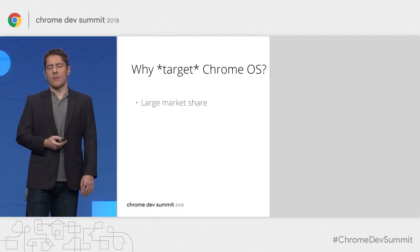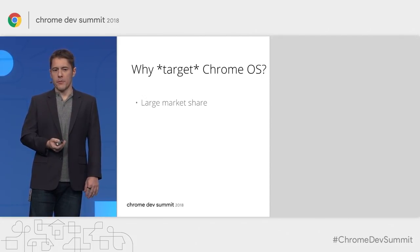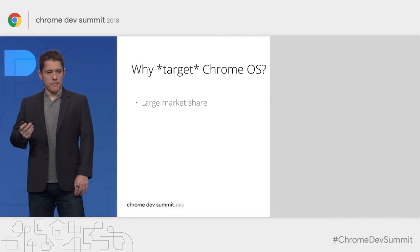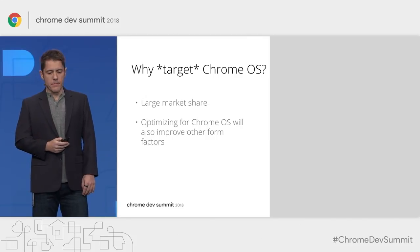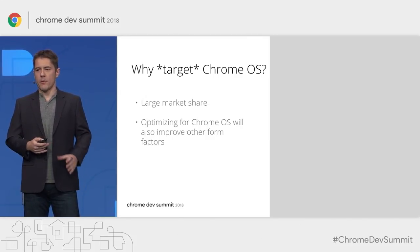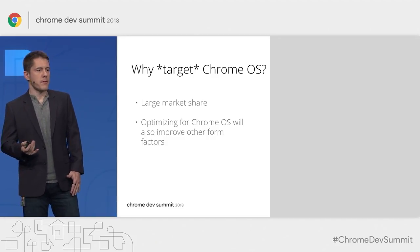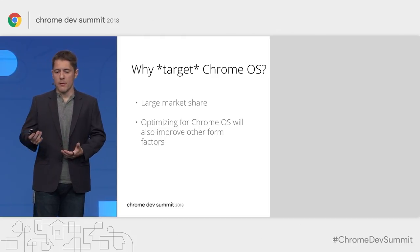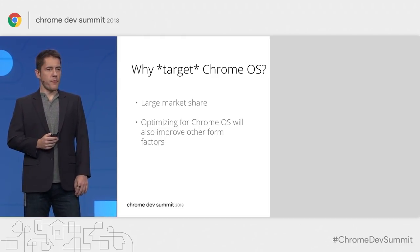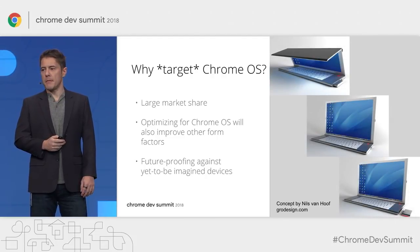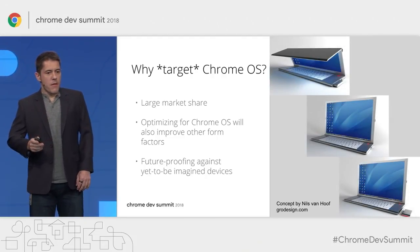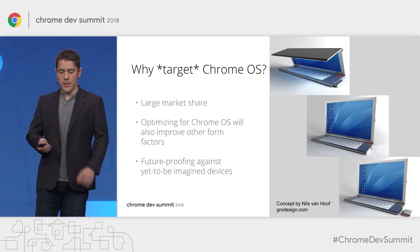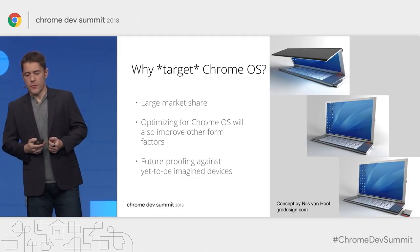In one slide: why target Chrome OS? Because of a large and increasing market share — Chromebooks have a very extensive presence in the education space. If you optimize for Chrome OS, you target a variety of convertible form factors — devices that may or may not have a keyboard, mouse, stylus, or touchscreen. This could future-proof you for devices that haven't been invented yet. In fact, Samsung just released a foldable screen phone that becomes a tablet — so the future is already here.